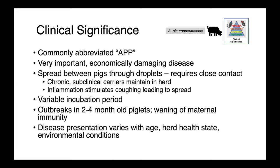Actinobacillus pleuropneumoniae is commonly abbreviated APP. APP causes a very important, economically damaging disease. This organism is spread between pigs through droplets and requires quite close contact between animals for transmission. Chronically infected animals or subclinical carriers maintain the organism within the herd. Inflammation stimulates coughing, leading to spread and subsequent infection of penmates. There is a variable incubation period, and we tend to see outbreaks in two- to four-month-old piglets, assumed to be due to waning maternal immunity. Disease presentation varies with age, herd health state, and environmental conditions — all aspects of the epidemiological triad.